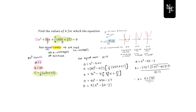We get one solution k equals 5 plus the square root of 37 divided by 2, and the other solution k equals 5 minus the square root of 37 divided by 2. So finally k equals 5 plus or minus the square root of 37, all divided by 2. This means that substituting this k value into the original equation gives a quadratic with only one x-intercept — equal roots.